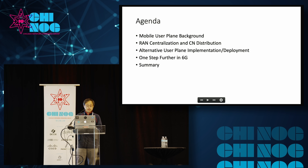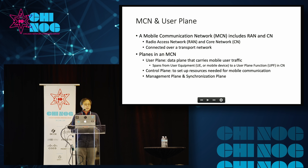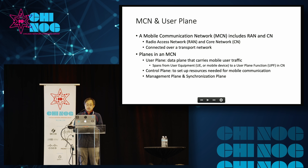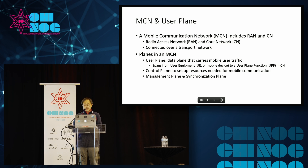And of course, at the end, we have a summary. A mobile communication network, MCN, includes two parts: RAN and core network. The RAN is basically radio access network, and the core network, CN, is the brain of this entire mobile communication network. They are connected over a transport network.